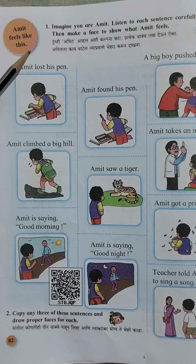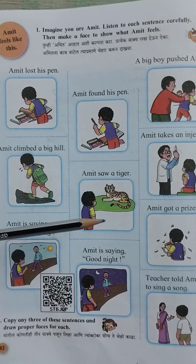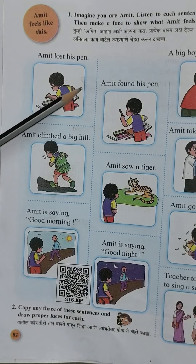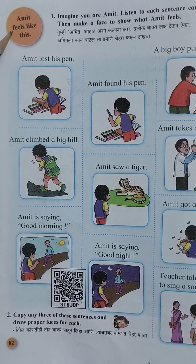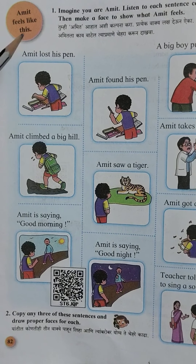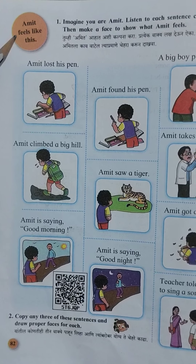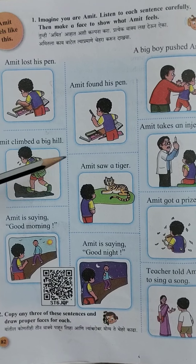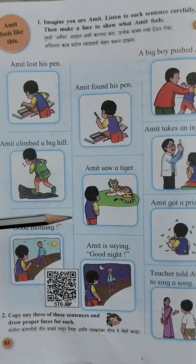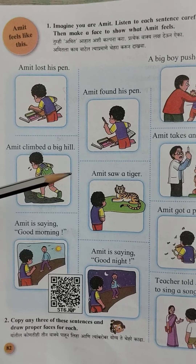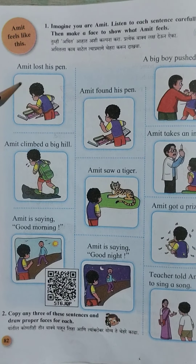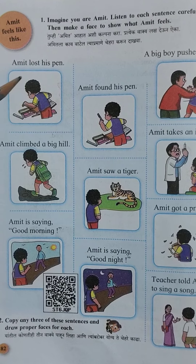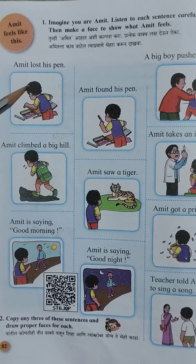So students, here is a boy Amit. In this lesson there is a boy Amit — so what he feels like. 'Feels' means 'is kasa watne' — kasa feel hota hai — that we will see through various pictures. In different situations he feels different. When there are different situations.